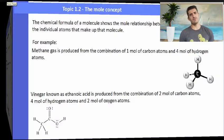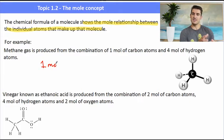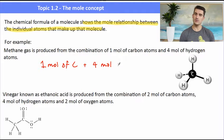So the chemical formula shows the mole relationship between the individual atoms that make up a molecule. And this came up in the last video a little bit. Methane gas is produced from the combination of one mole of carbon atoms and four moles of hydrogen atoms. That's because the formula for methane is CH4. So we need one mole of carbon plus four moles of hydrogen to make one mole of methane, one mole of CH4.